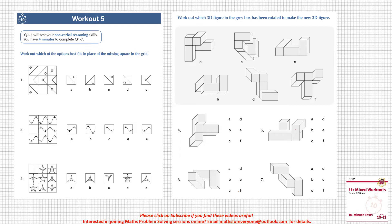Which of these options best fits in place of the missing square in the grid? If you look at the lines, this will be an extension — a symmetrical line cutting the square in half, going from left to right. Which means this cannot be an option, and this cannot be an option, so B and E are out.